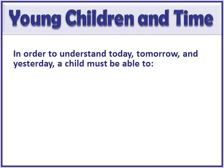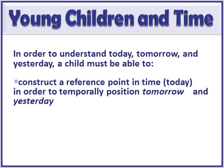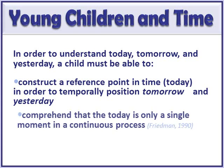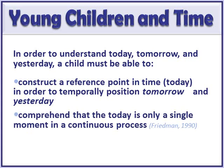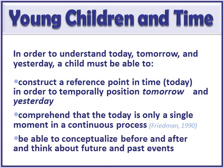Research shows that in order for students to understand today, tomorrow, and yesterday, a child has to be able to construct where they are in time — establish a reference point of 'here I am,' and relative to that, identify yesterday and tomorrow — and understand that this reference point is only a single moment in a continuous sequence. So today is Wednesday makes yesterday Tuesday, but today is Friday makes yesterday Thursday, which is very confusing to young children. Students must also be able to conceptualize before and after, future and past, before they can even use those terms — and these are very abstract, tough concepts for K-2 students.